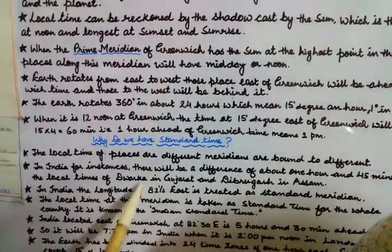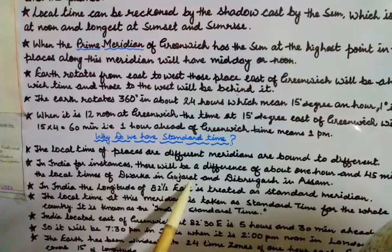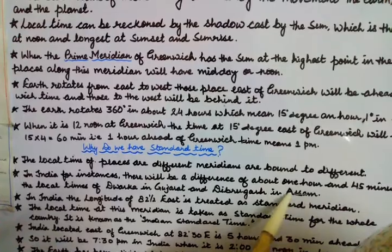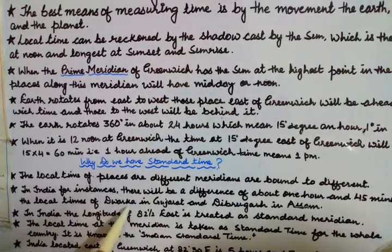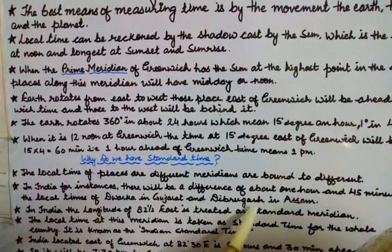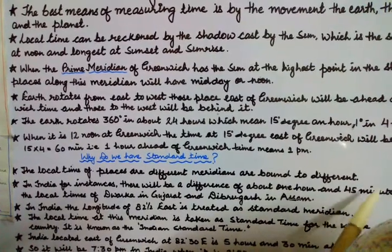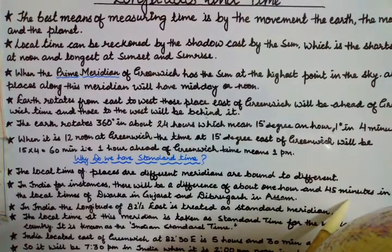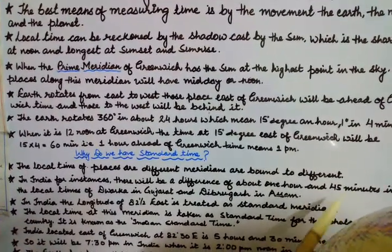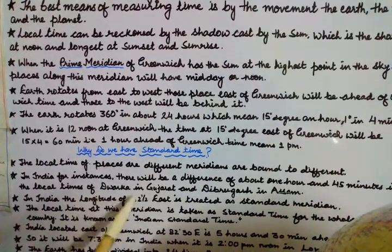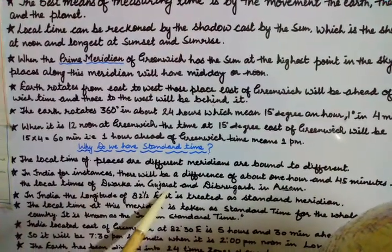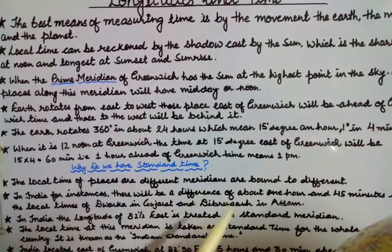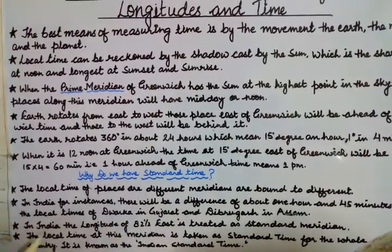If we look within India itself: Dwarka in Gujarat is to our west, and Dibrugarh in Assam is to our east. Since the earth rotates from east to west, Dibrugarh in Assam sees sunrise 1 hour and 45 minutes earlier than Dwarka in Gujarat.